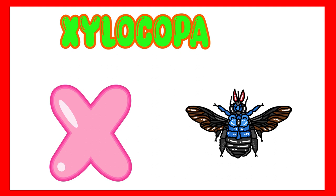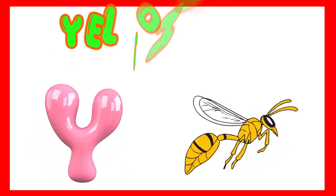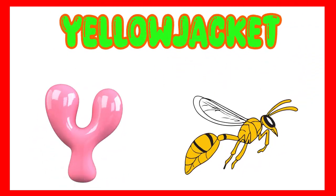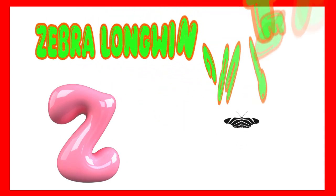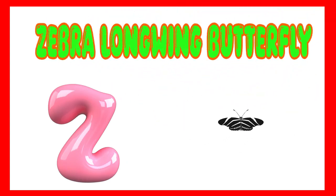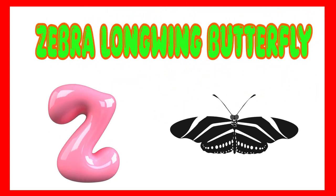Y is for yellow jacket. Y, yellow jacket. Z is for zebra longwing butterfly. Z, zebra longwing butterfly.